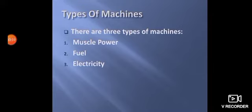First muscle power. Jho insaan apni khud ki power ko use karke machine chalata hai. Usse hum muscle power kehate hai. Second fuel. Jho machines petrol ya diesel se chalti hai. Those are called fuel machines. Third electricity. Jho machines bijli se chalti hai. Those are called electricity machines.